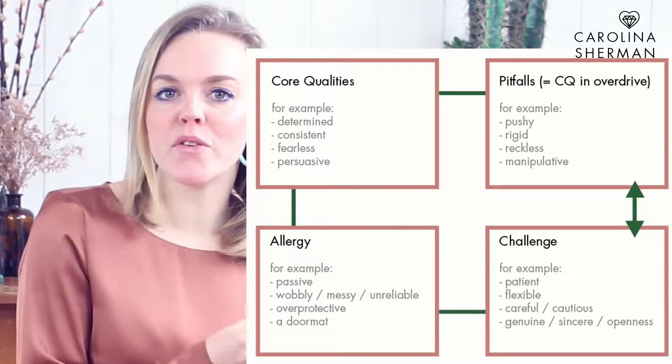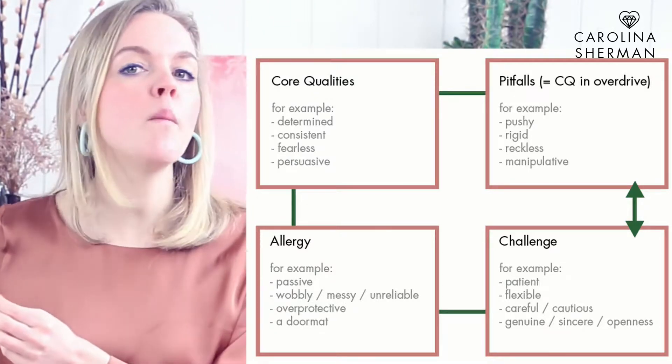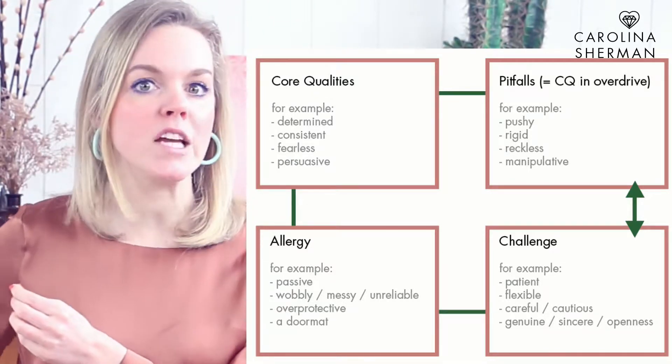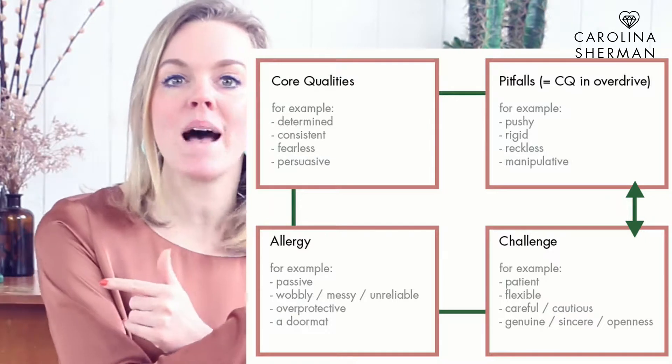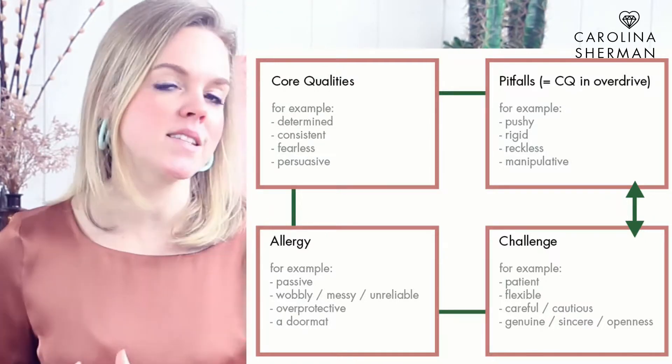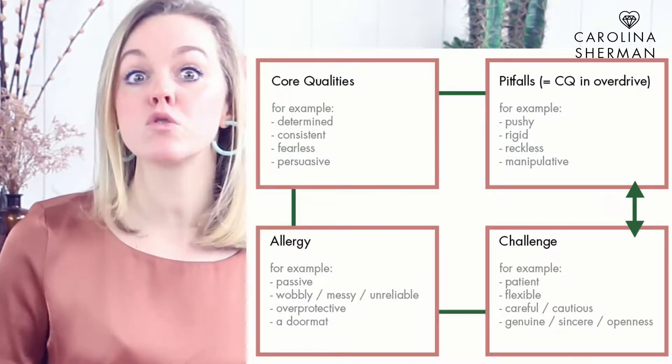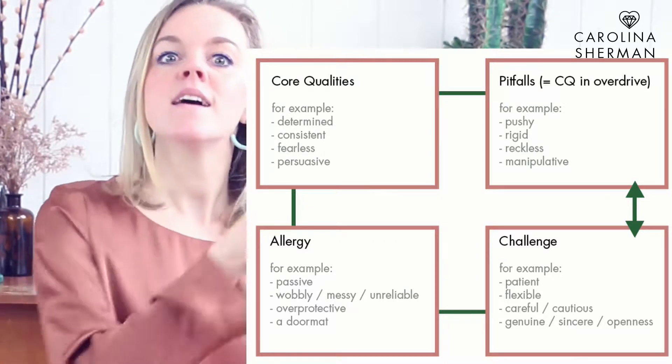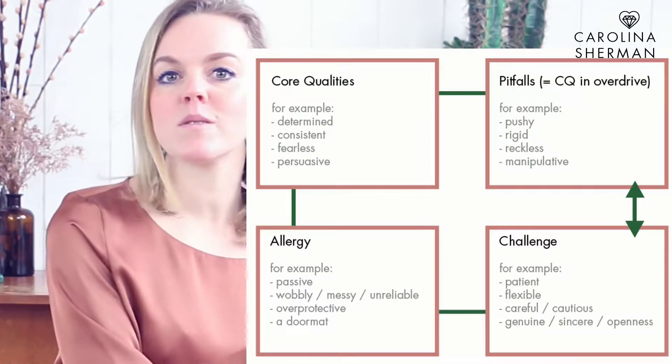So if you are determined, you can't stand too much patience, which ends up in passiveness. If you are consistent, you can't stand too much flexibility, which might end up in wobbliness. This is where conflicts between people can arise. This is why relationships are not always easy. And that's why there is a beauty in recognizing these patterns.